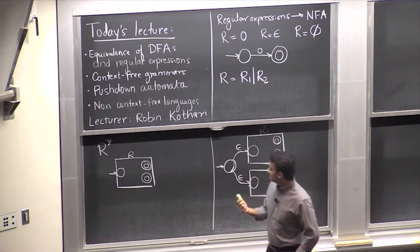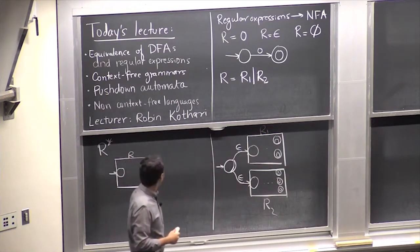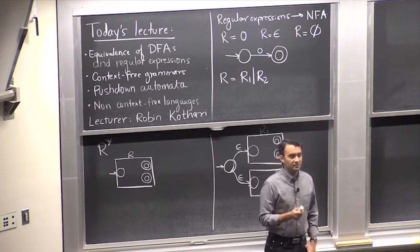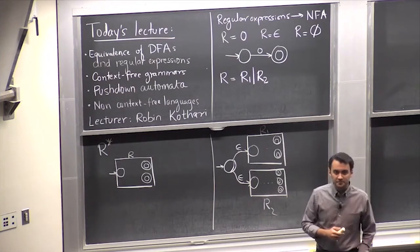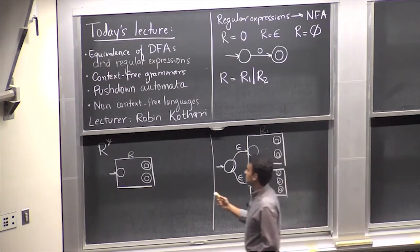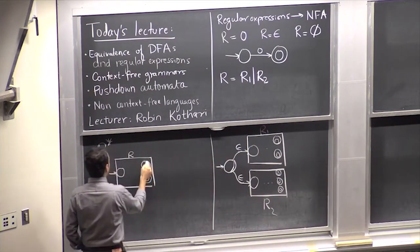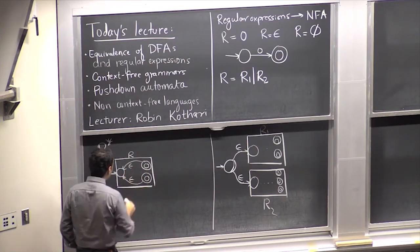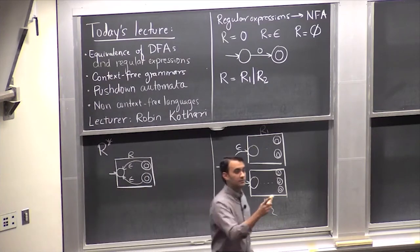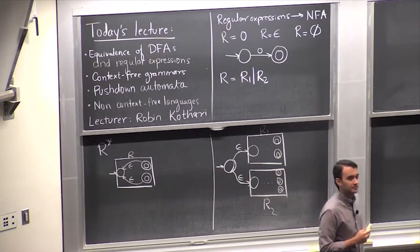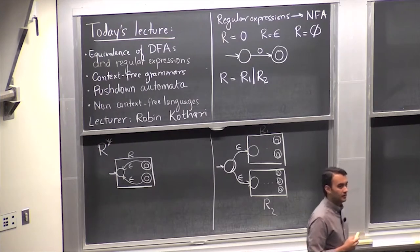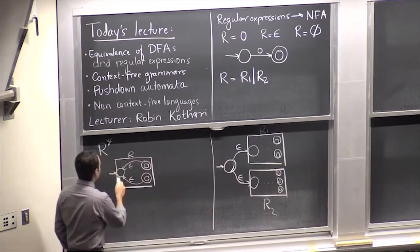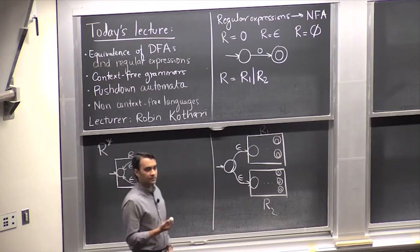How do you create an NFA for R star? The accept states go back to the start state with null transitions. The start state should also be an accept state, since R star requires accepting the empty string. But if you make the start state an accept state, it could be an intermediate state in the NFA and you might make other states become accept states. So just add a new start state which is also an accept state, and make a null transition to the old start state.